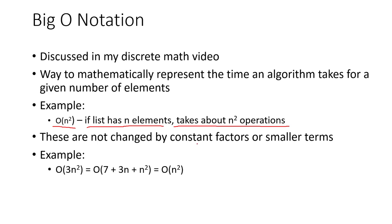So these are not changed by constant factors or smaller terms. So note that 3n squared is the same as n squared because it differs only by a constant factor of 3. The constants don't really matter in the long run when we're looking at algorithmic runtimes. And another thing to note is that 7 and 3n don't affect an n squared operation because they take significantly less time than n squared. So because this is the leading term, this whole Big O right here would be the same as this one right here.